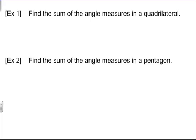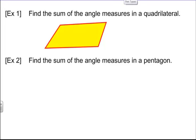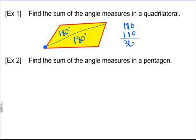Find the sum of all the angle measures in a quadrilateral. It says quadrilateral because it doesn't matter what kind. Take any quadrilateral and make triangles out of it — because the triangle sum theorem says every triangle adds up to 180 degrees. Taking one point and drawing to other points, that splits it into two triangles: 180 plus 180. So any quadrilateral has 360 degrees.